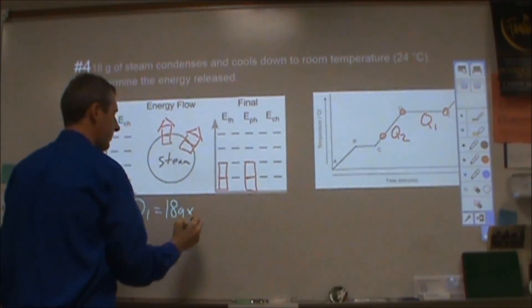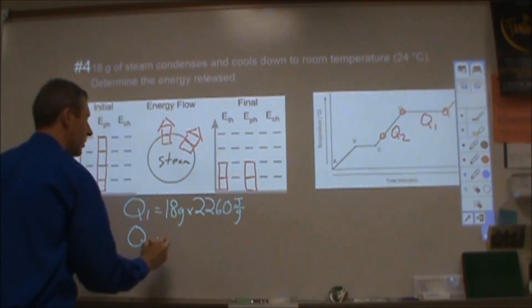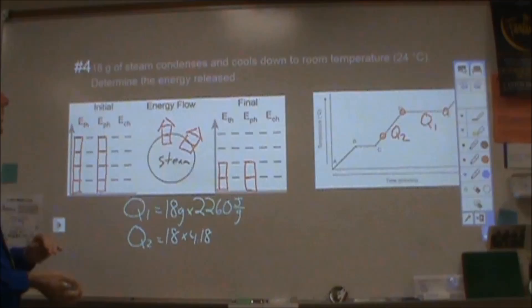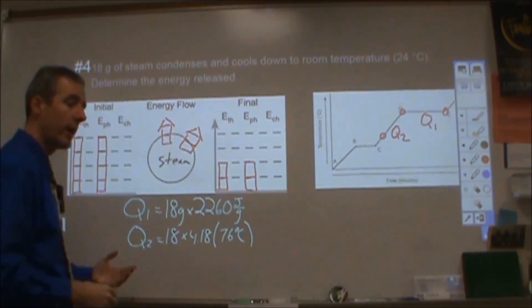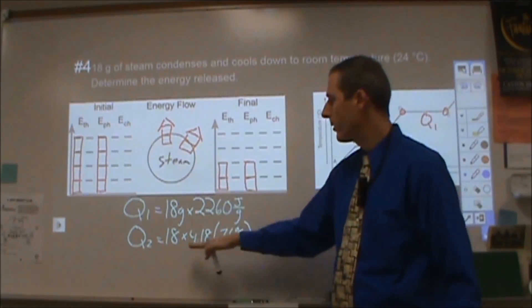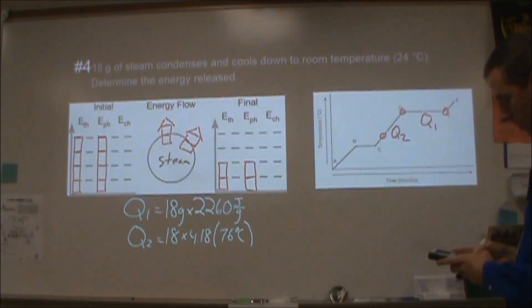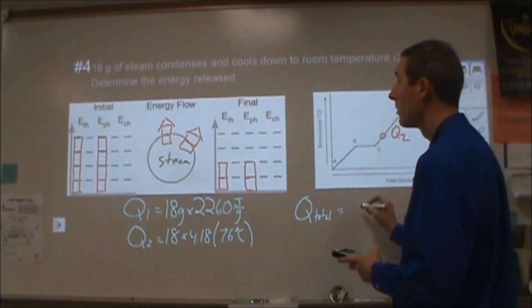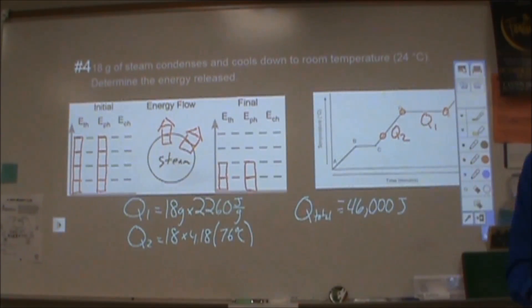I've got 18 grams and then 2,260 joules per gram to condense that steam. And the second one, we have 18 grams times 4.18 joules per gram per degree Celsius. And our temperature change is from 100 to 24. That's a difference of 76 degrees. That temperature change, we can consider to be a negative value giving us a negative Q. We can also consider this constant to be a negative value because it's designed for condensing. So I'm going to take these two things, I'm going to add them together, but I'm going to make the final answer into a negative. So my total Q, combination of Q1 and Q2 is, two sig figs, 46,000 joules. And we can call it to be a negative.